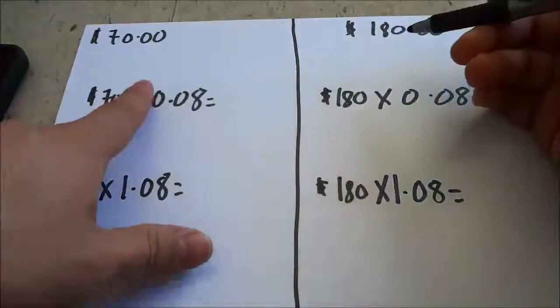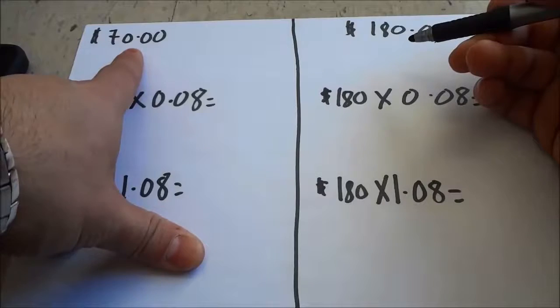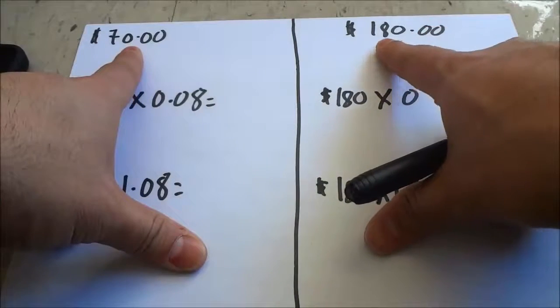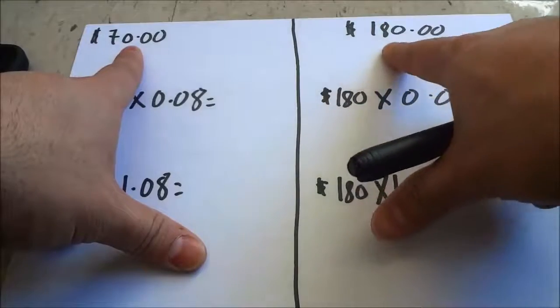Right here I have two examples. The first example is a product that costs $70, and the second example on the right is a product that costs $180.